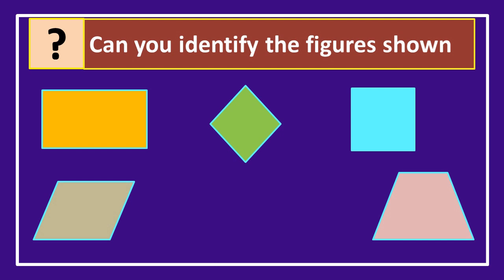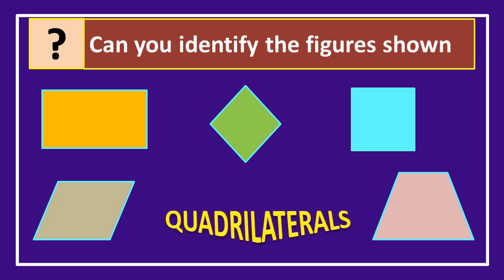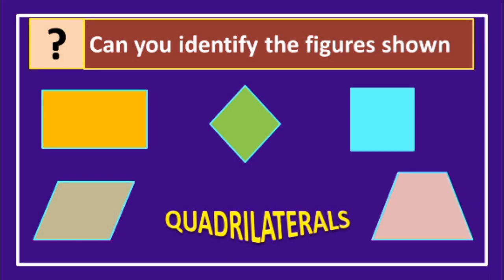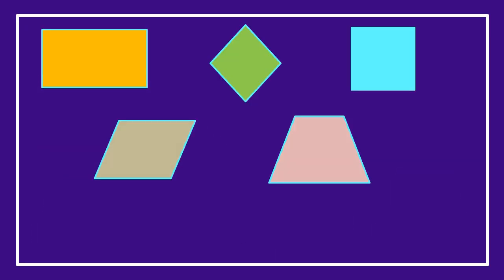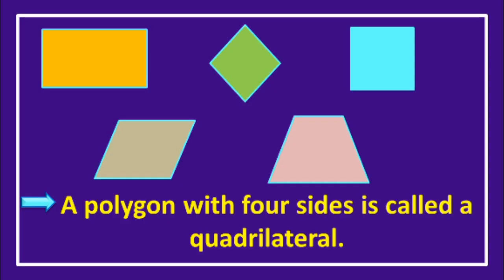Look at the images shown on your screen. Children, can you identify the images or the figures? Yes, you are absolutely right. They are called quadrilaterals. But children, do you know what are quadrilaterals? Yes, you are right once again. A polygon with 4 sides is called a quadrilateral. So all these images represent different types of quadrilaterals.